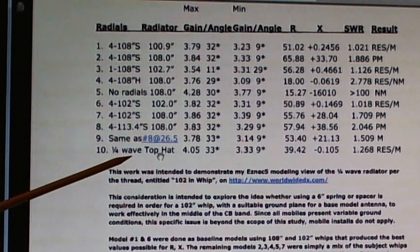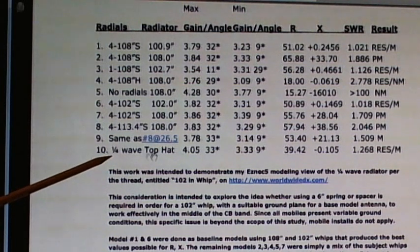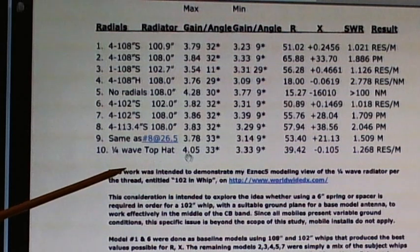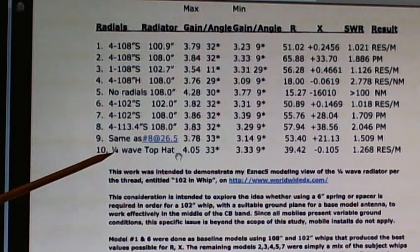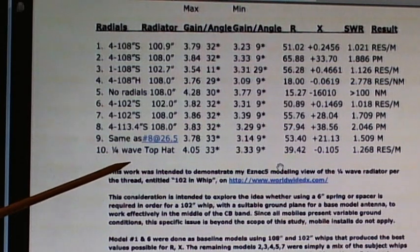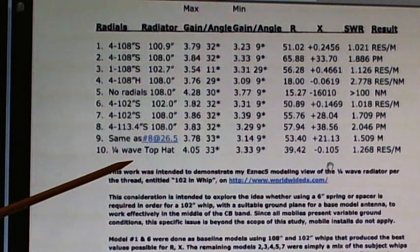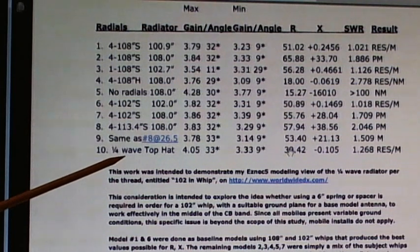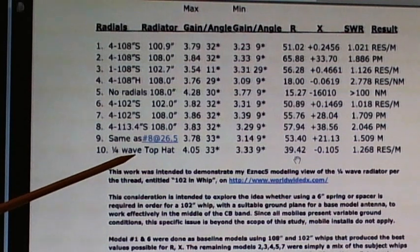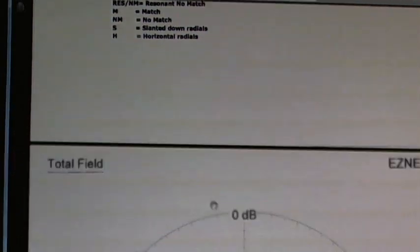Number 8, as a matter of fact, I used a 108-inch radiator under the radiator column here, a 108-inch radiator, and I added 5% to it to get 113.4, which theory predicts for us we should use 5% longer radials than a radiator. And I'll just show you what kind of match that produced. And number 9, it's the same as number 8, except all I did is I took the model down to a frequency where I found resonance and I moved it all the way down to 26.5 and found resonance down there.